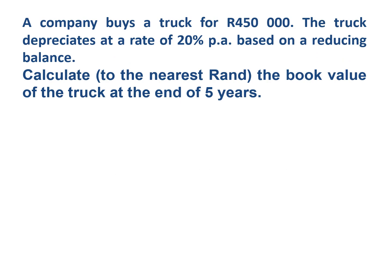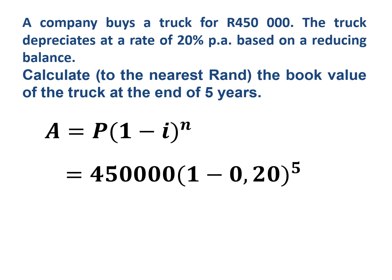And then this one, a company buys a truck for 450,000 Rand. The truck depreciates at a rate of 20% per annum based on a reducing balance. Calculate to the nearest Rand the book value of the truck at the end of five years. So we've got A equals P bracket one minus i to the power of n. So it's 450,000 Rand and it's depreciating at 20%, so 0.20 for five years. And at the end of five years, it's still going to be worth 147,456 Rand to the nearest Rand.